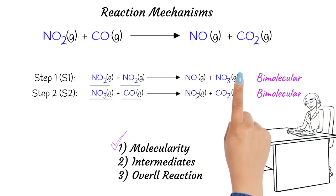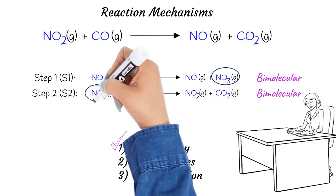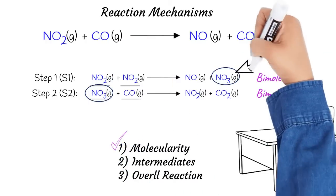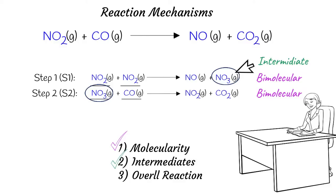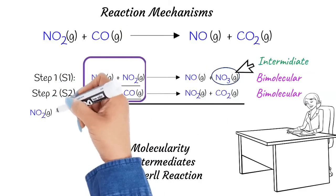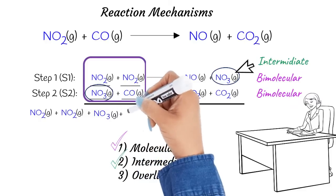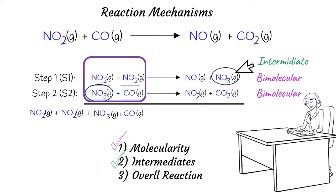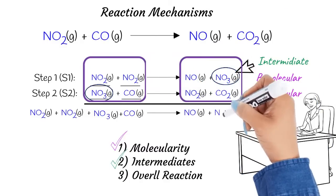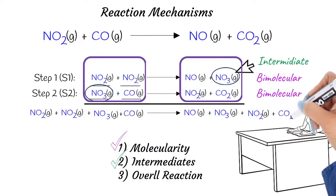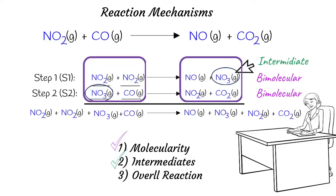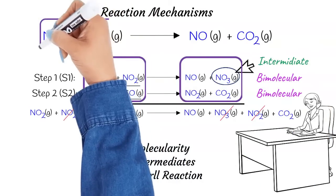Note that in this example, NO3 is produced in one step and gets consumed in the following step during the reaction. Therefore, it is considered an intermediate of this reaction. Keep in mind that intermediates are neither reactants nor products in the overall reaction. When we add up the elementary steps, we end up with the overall reaction. Placing all reactants on the left gives us two NO2 molecules, NO3, and CO; on the product side we get NO, NO3, NO2, and CO2. NO2 and NO3 appear on both sides, so they cancel out, giving the overall reaction: NO2 + CO → NO + CO2.